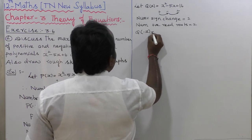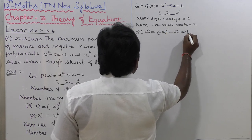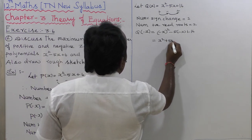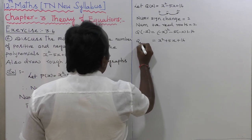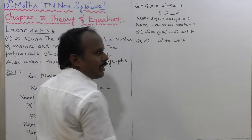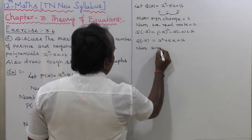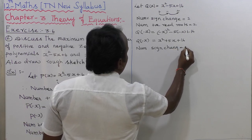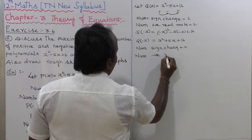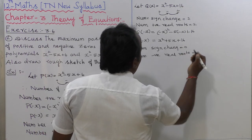To find q of minus x: q of minus x equals minus x whole squared minus 5 times minus x plus 16, which equals x squared plus 5x plus 16. All terms are positive — plus, plus, plus — so there is no sign change. Therefore, number of sign changes is equal to 0, and number of negative real roots is also equal to 0.